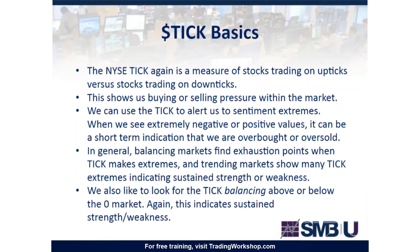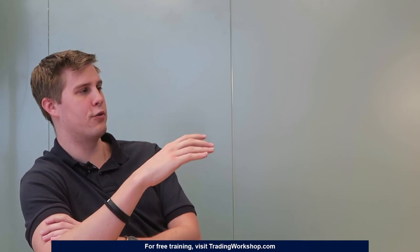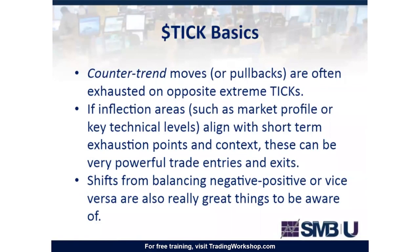The other way to use TIC is to look at where it's balancing. If TICs are basically holding above zero all day, that's showing you that for the majority of the day most stocks have been trading on upticks — indicative of overall market strength. In a trending market making higher highs and higher lows, counter-trend pullbacks often come at exhausted points to the opposite TIC level. So if we're trending up all day and suddenly get a negative TIC to negative 600 or lower, that can be the major turning point where we put in a higher low, letting you scale in to catch a bigger trend move.